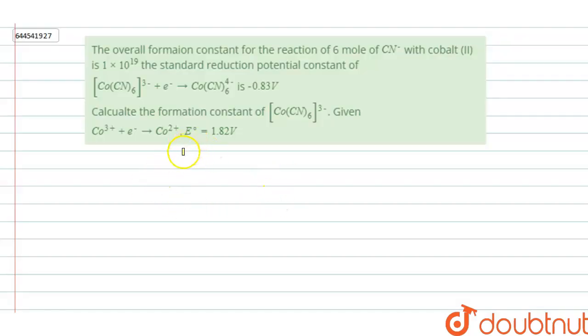Hello friends, as you can see we have got a numerical type question. In this question it is asked: the overall formation constant for the reaction 6 moles of CN- with cobalt 2+ is 1 into 10 to the power 19. The standard reduction potential constant of [Co(CN)6]3+ plus 1 electron gives [Co(CN)6]4- is minus 0.83 volts. So standard reduction potential constant is given.